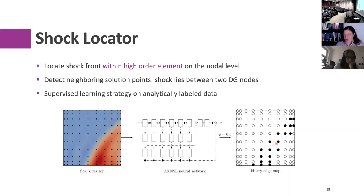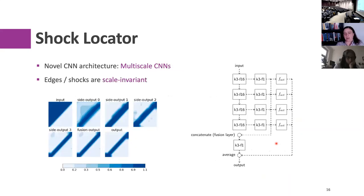We did this in a supervised manner, because we can prescribe shocks analytically — we know where they are and what the neighboring solution points are. We came up with a more advanced network: a multi-scale CNN. It's not our original idea, but we adapted it from existing work. It uses the knowledge that shocks or edges in an image are scale-invariant: no matter how far you zoom in or out, an edge will always be an edge.